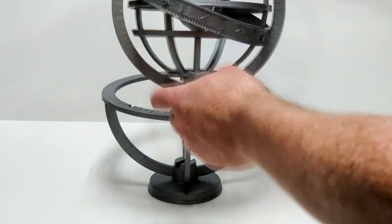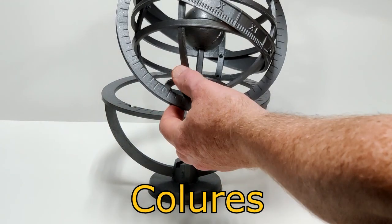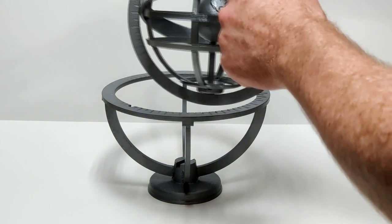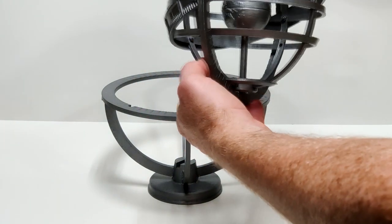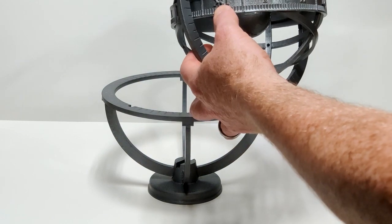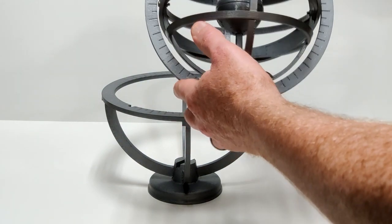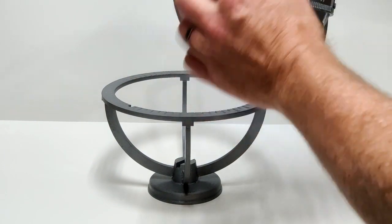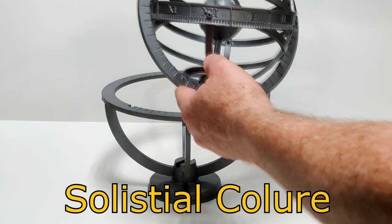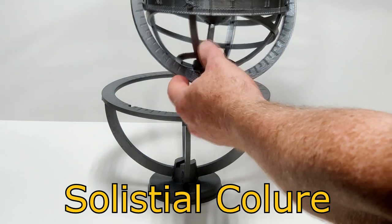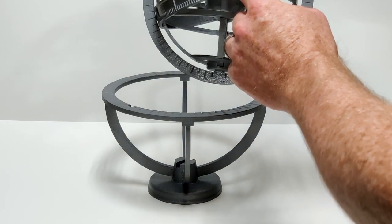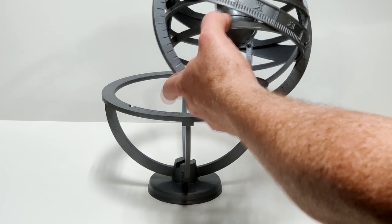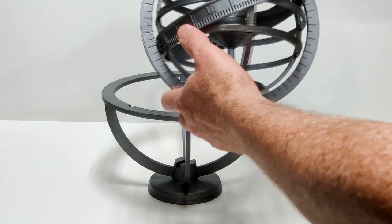These vertical rings are called colures. The one that runs through the six and the twelve indicating the summer solstice and the winter solstice is called the celestial colure, and the one that runs through the three and the nine is called the equinoctial colure.